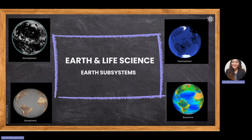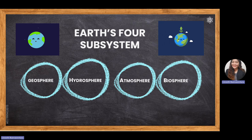Good morning everyone. Today we're going to continue our lecture for Earth and Life Science on Earth subsystems. From our previous study, we've known that Earth or our planet is dynamic, and each part of Earth's surface — air, land, water, and life — are interconnected and continuously interact with each other.